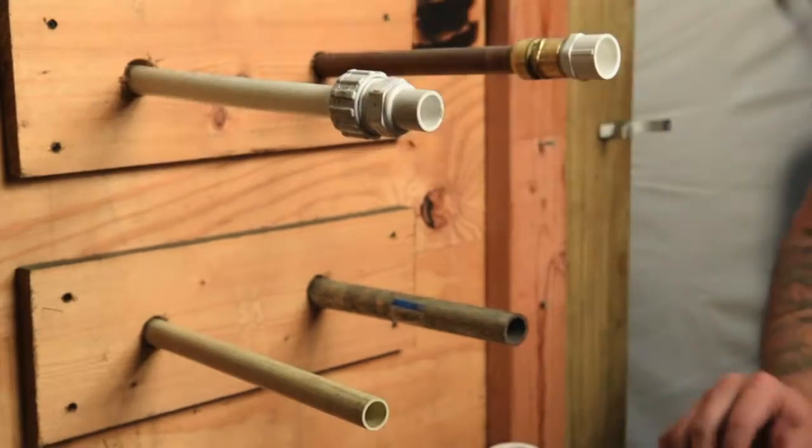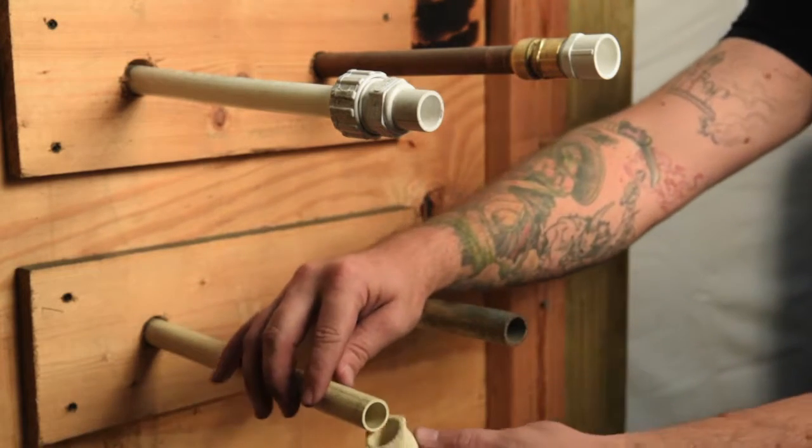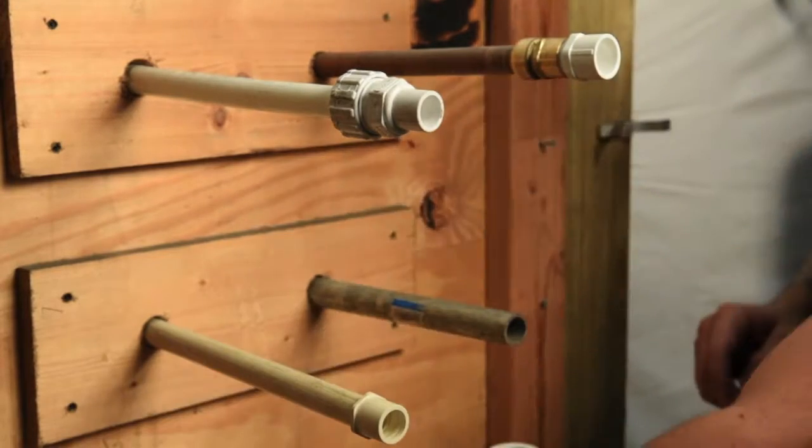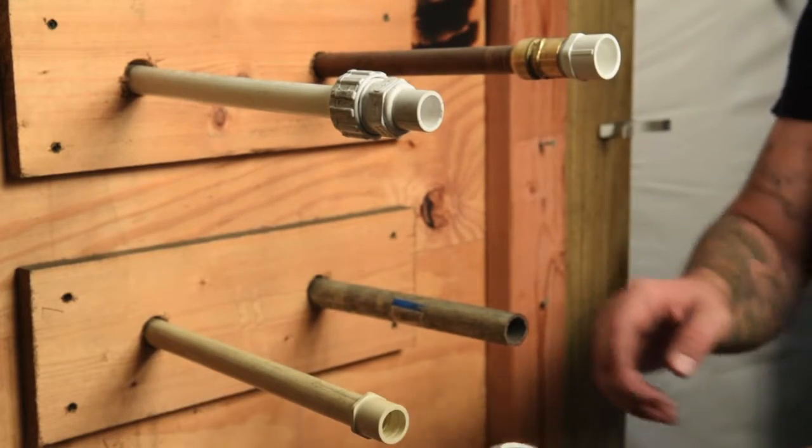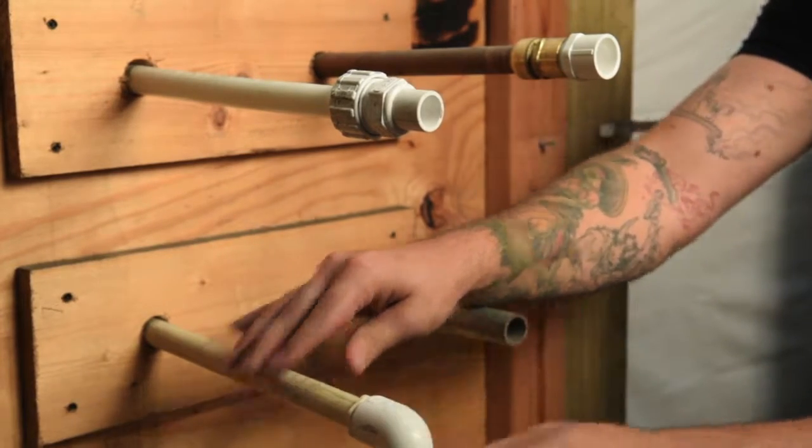With cPVC the most common transition is a three-quarter cPVC to three-quarter PVC adapter. Using cPVC glue attach the adapter to the pipe. Then with regular PVC glue attach a PVC fitting to the adapter.